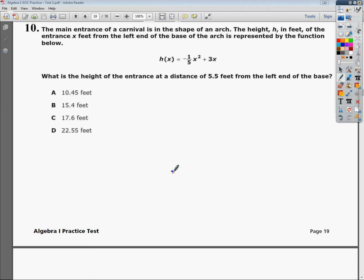The question says, the main entrance of a carnival is in the shape of an arch. Here's an arch, the worst one drawn ever. It is what it is. The height in feet of the entrance, x feet from the left of the base, is represented by the function below.